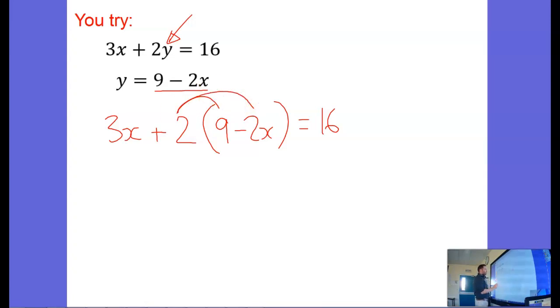2 times 9 and 2 times minus 2, so I get 3x plus 18 minus 4x equals 16. 3x minus 4x is minus 1x plus 18 equals 16. Let's take away the 18 there, and I get minus x equals minus 2, which means that x equals 2.